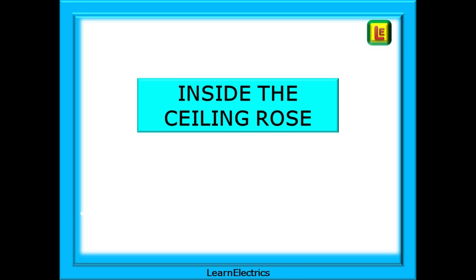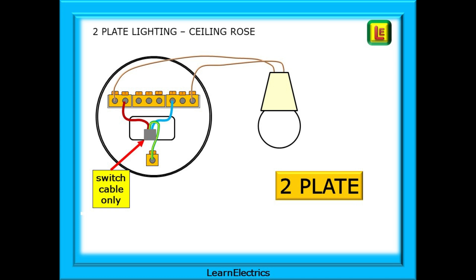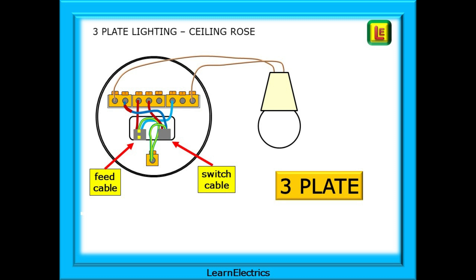Let's take a look inside the ceiling rose. Here is a two-plate lighting circuit ceiling rose. Notice that only the switch cable comes into the ceiling rose, and we've also shown the connections to the lamp. And this is a ceiling rose for a three-plate lighting circuit. Now two cables enter the ceiling rose — the feed cable and the switch cable — and again we've shown the conductors to the lamp.